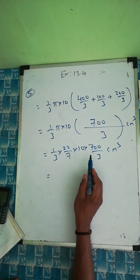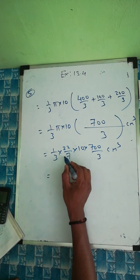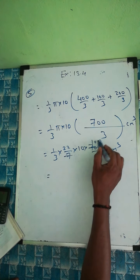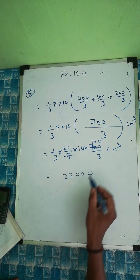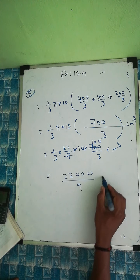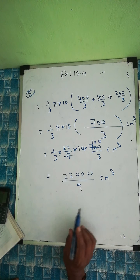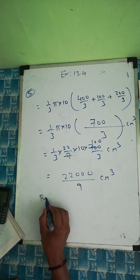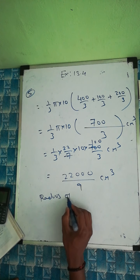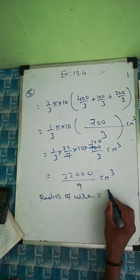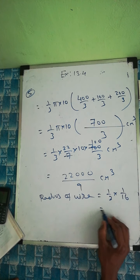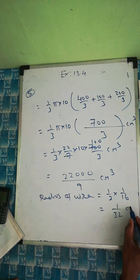Simplifying: 22/7 × 700 = 22 × 100 = 2200. So volume = (1/3) × 2200/3 × 10 = 22000/9 cm³. Now, the radius of the wire: the diameter is 1/16 cm, so radius = (1/2) × (1/16) = 1/32 centimeter.